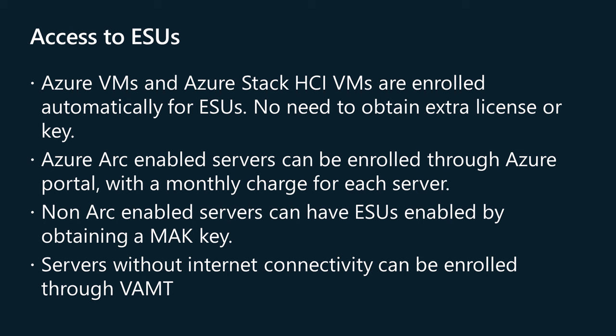Customers who cannot connect to Azure Arc to apply ESUs can use multiple activation keys (MAK) through Microsoft 365 Admin Center. With some versions of Windows Server, you may need to install the servicing stack update and extended security updates licensing preparation package available from the Microsoft Download Center before they can be enabled for ESUs. Activation occurs over the internet. For computers unable to directly communicate with the internet, you can activate ESUs using the Volume Activation Management Tool (VAMT) in conjunction with the VAMT ESU configuration file.